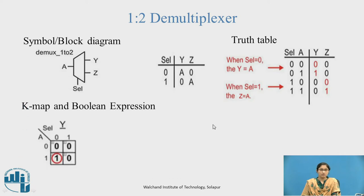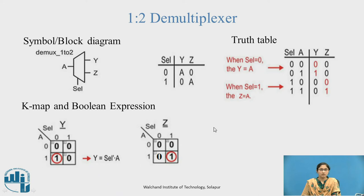Kmap and Boolean expression: For the Y output, Y is active high when select is 0 and A is 1, giving the Boolean expression Y = select̄ · A. For the Z output, Z is active high when select is 1 and A is 1, giving the Boolean expression Z = select · A.